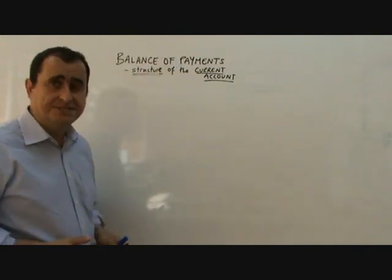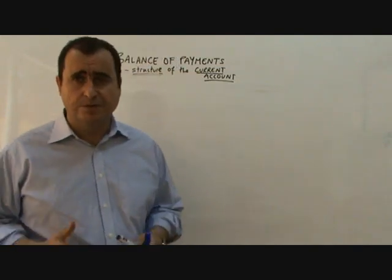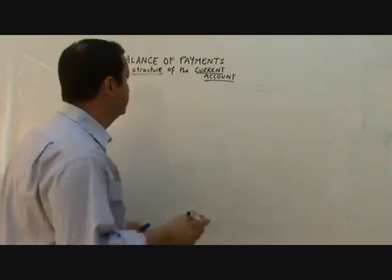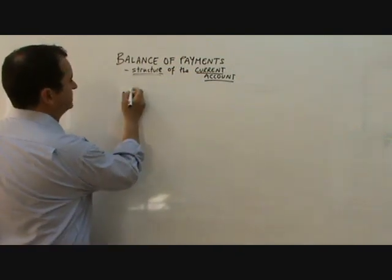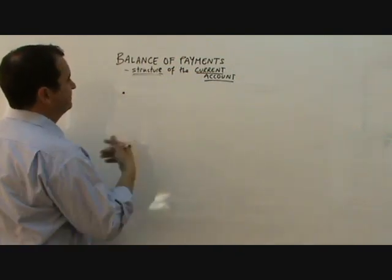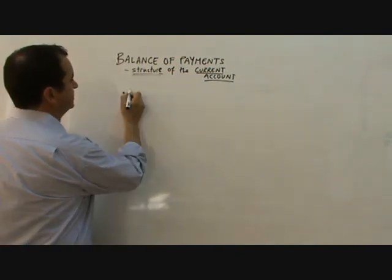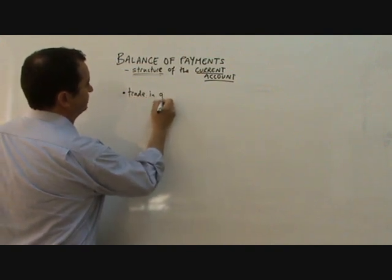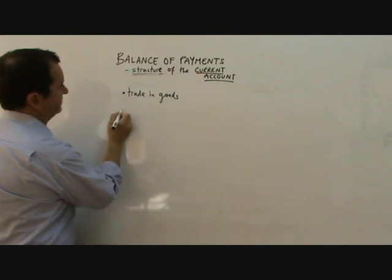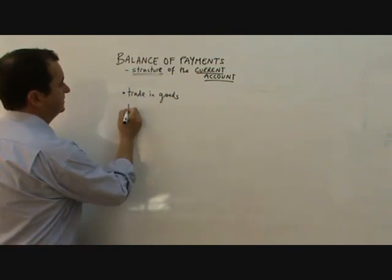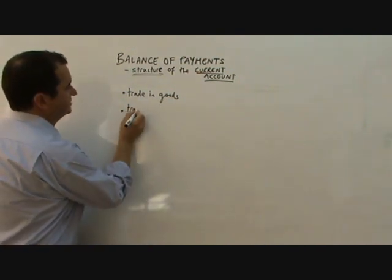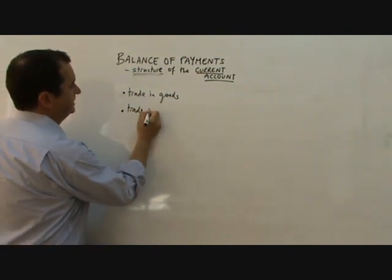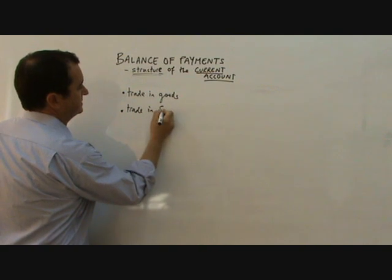The current account is made up of four components. It records money flows as a result of the trade in goods, and it records flows of money resulting from the trade in services.